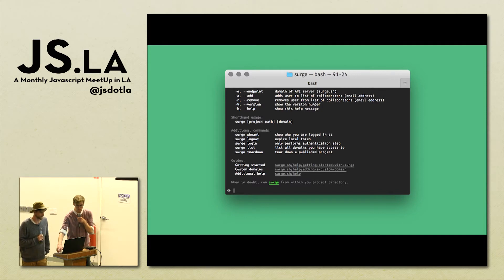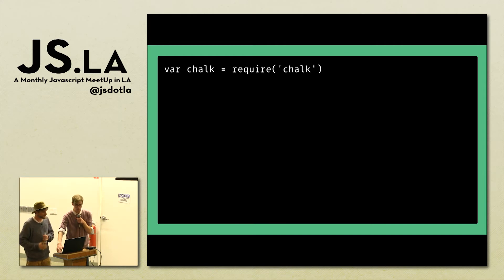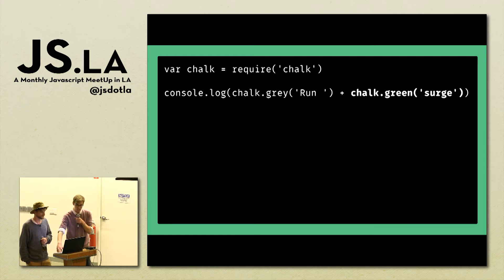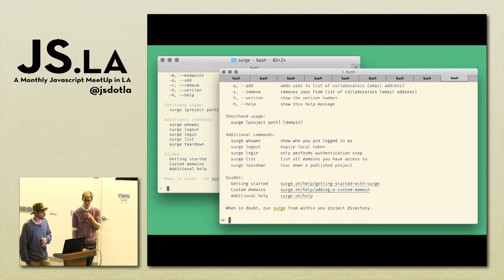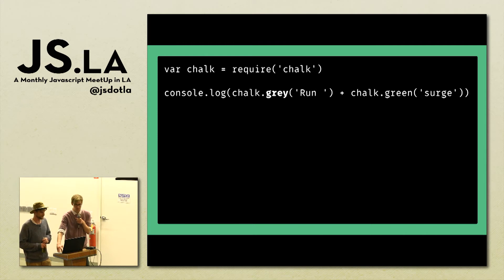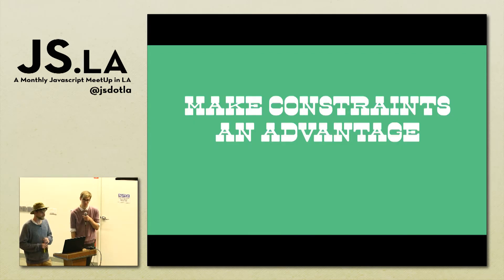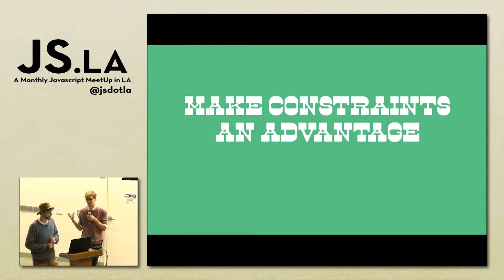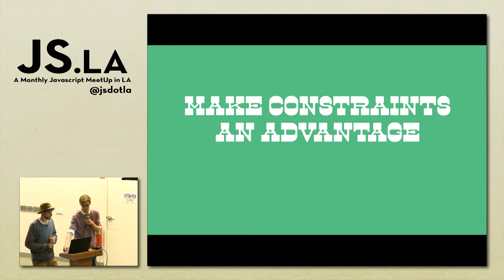That also raises the question of what constraints the terminal has and whether you can use them to your advantage. You can use colors in the terminal — pretty basic colors — but they're actually user-specified. You can install modules like Chalk and say this text should be gray, this text should be green. But it turns out different themes and different terminal clients interpret colors differently. So sometimes you have to use that constraint to your advantage — say this text should be 'dim' instead of specifically gray. The terminal's limited feature set means even additional things like colors rarely work exactly as expected.